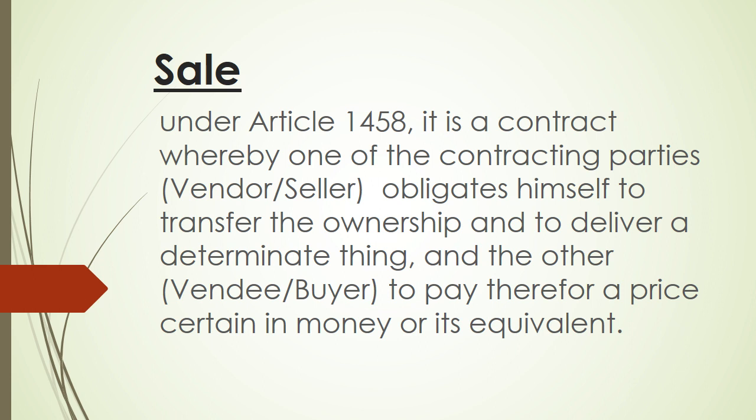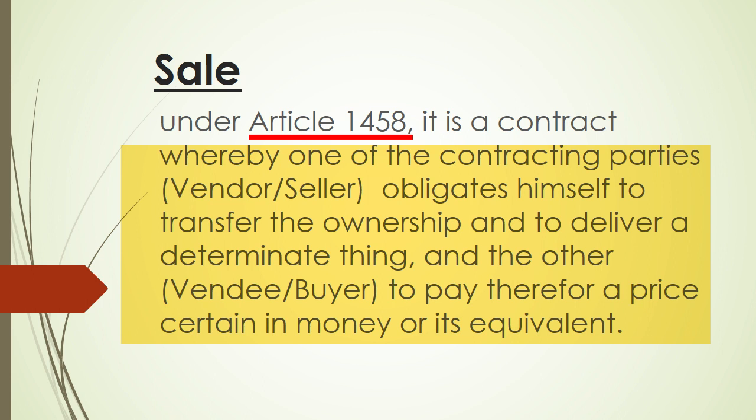How does the law define the contract of sale? Under Article 1458 of the Civil Code, sale is defined as a contract whereby one of the contracting parties, called the vendor or seller, obligates himself to transfer ownership and to deliver a determinate thing, while the other party, called the vendee or buyer, is to pay the price of this object, which price must be certain in money or its equivalent.